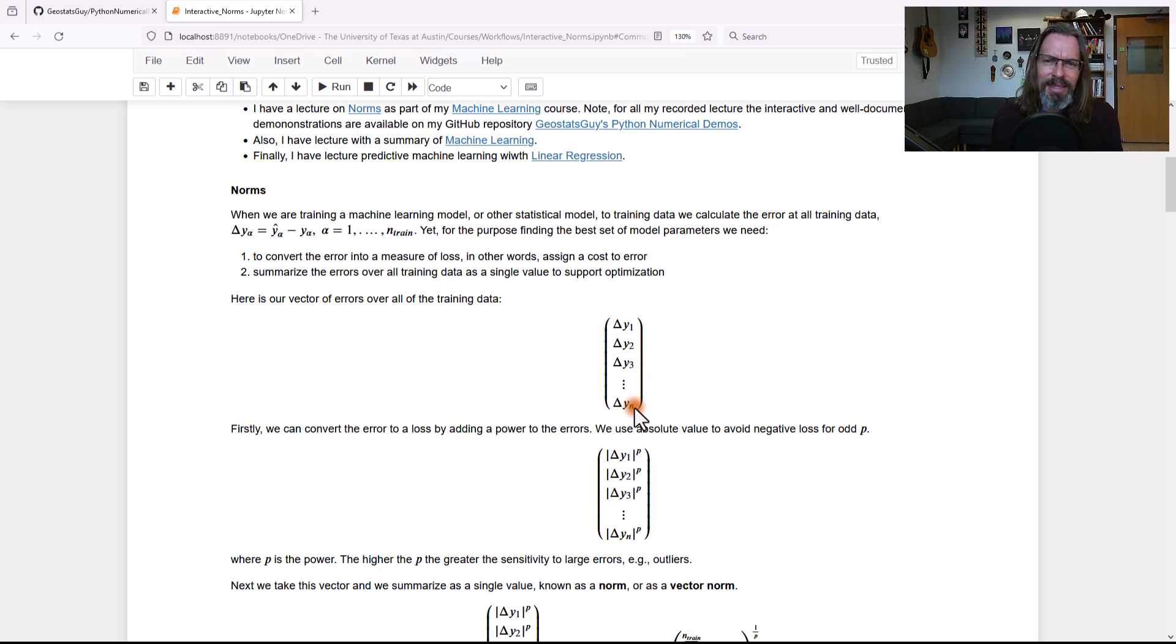Now, you can't tell a machine learning model to just fit or minimize all those errors. That doesn't work. What we need to do is we need two things. First, we need to convert the error into a measure of loss. In other words, we're going to ascribe or assign a cost to the error. You might think that error is really bad. And so you might say that, whoa, the bigger the error, the cost should go up.